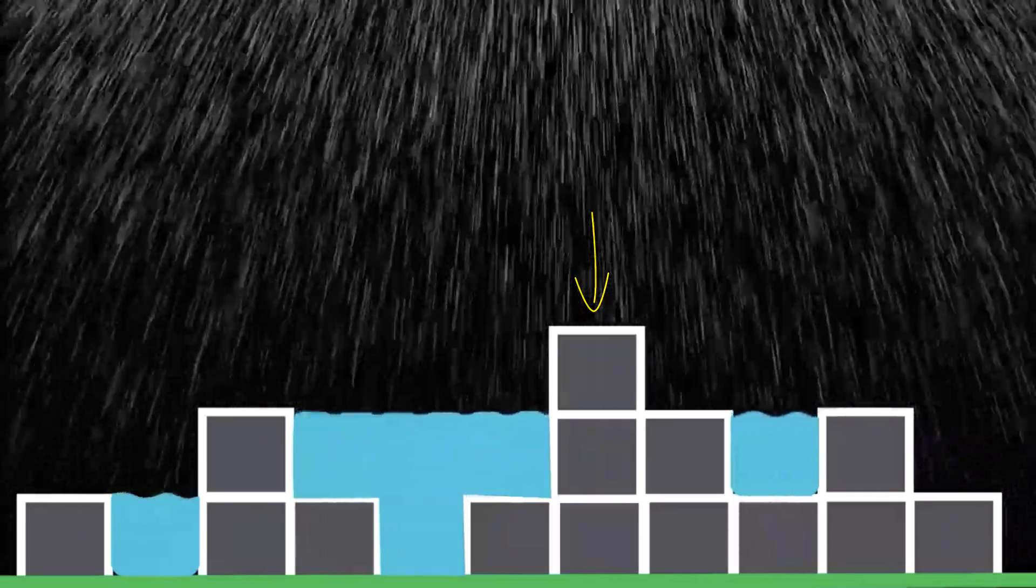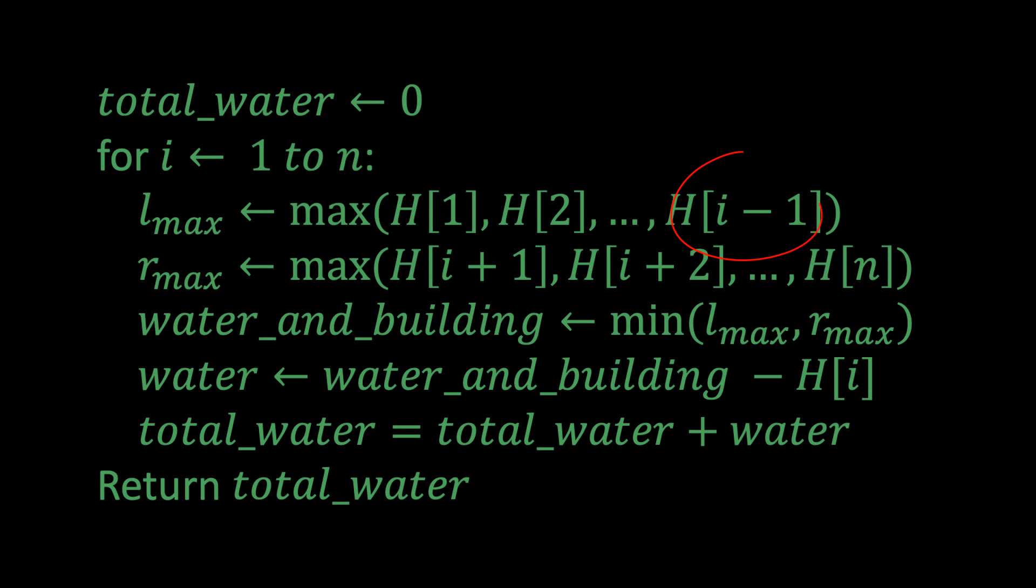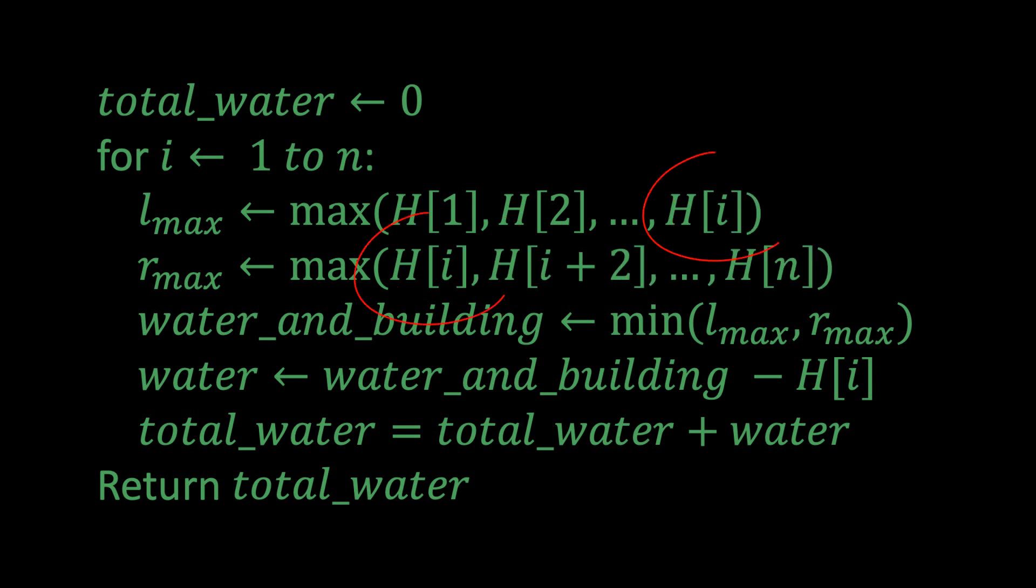So a quick fix to this is to change the i-1 and i+1 in the algorithm to be i. That way I can also include the i-th building in the height. And so simply changing the old algorithm to this new algorithm makes our new algorithm 100% correct for all test cases.